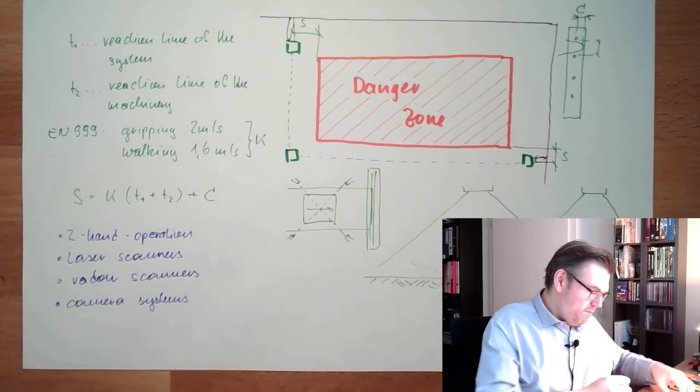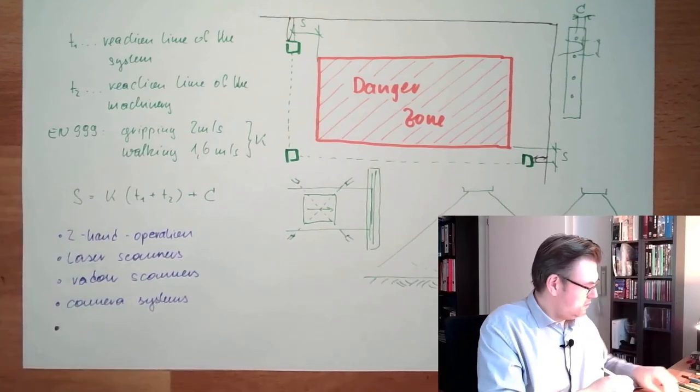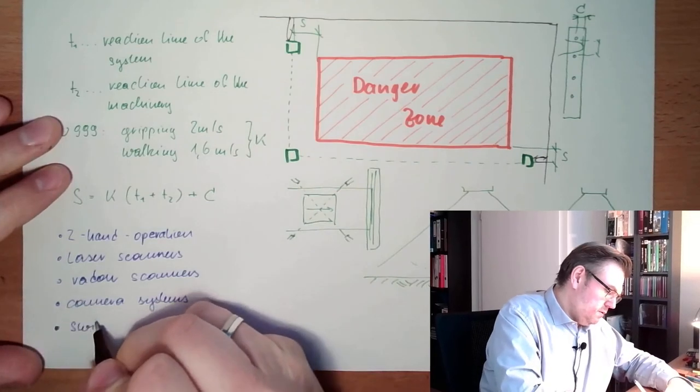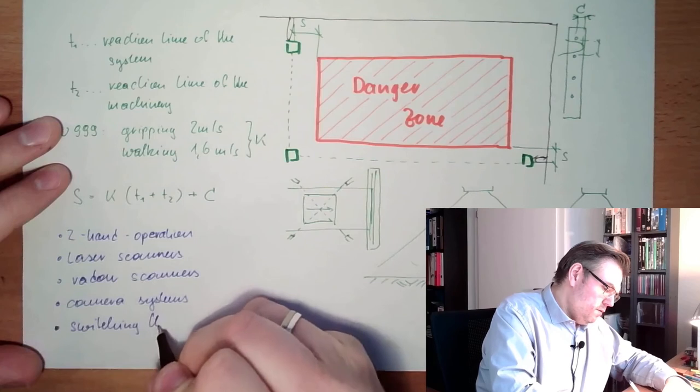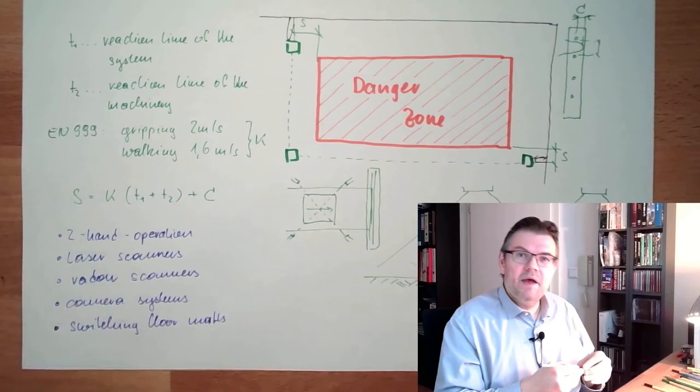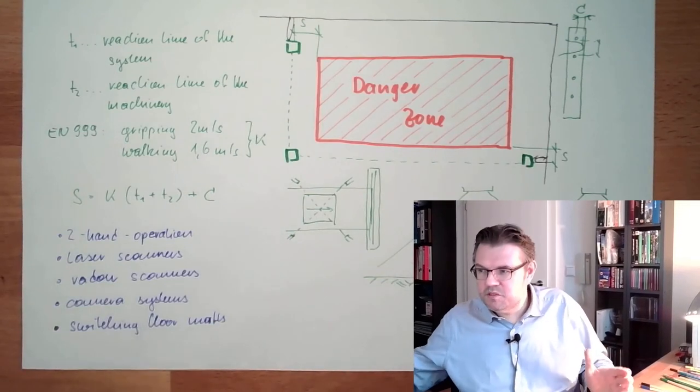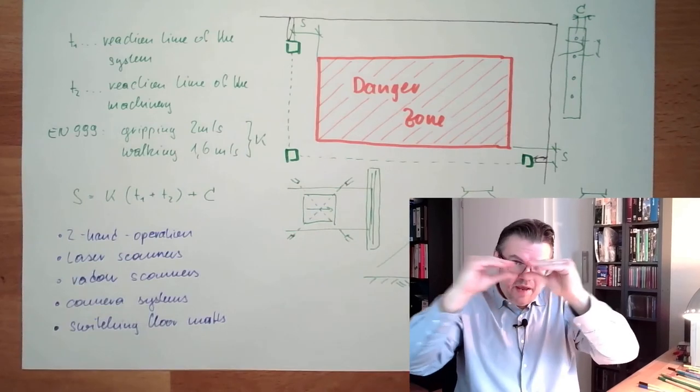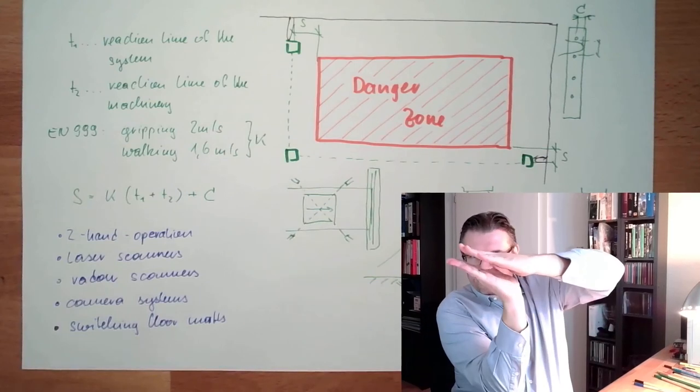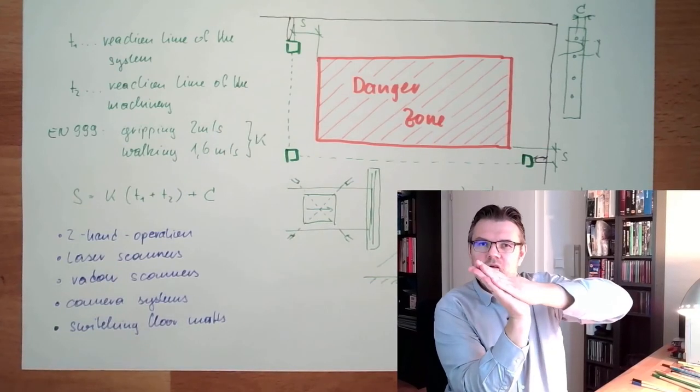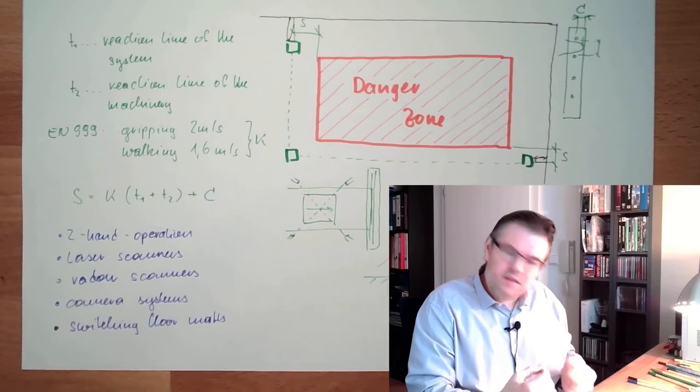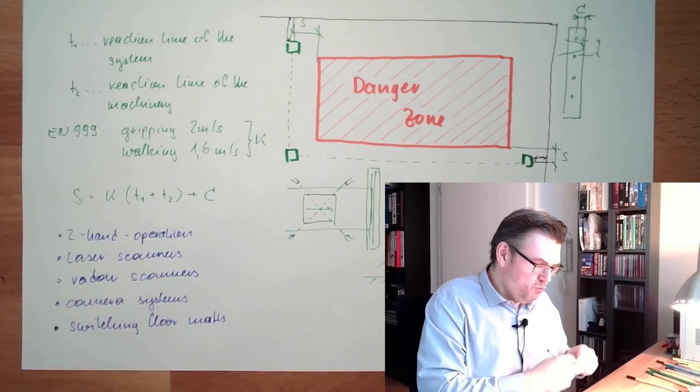And then there are switching floor mats. So you put a mat on the bottom. If somebody steps on, there are two layers inside those mats. And if somebody steps on, these two layers are contracted and you have contact. So switching mats, just reacting on the weight of somebody going there. You put them on the ground.